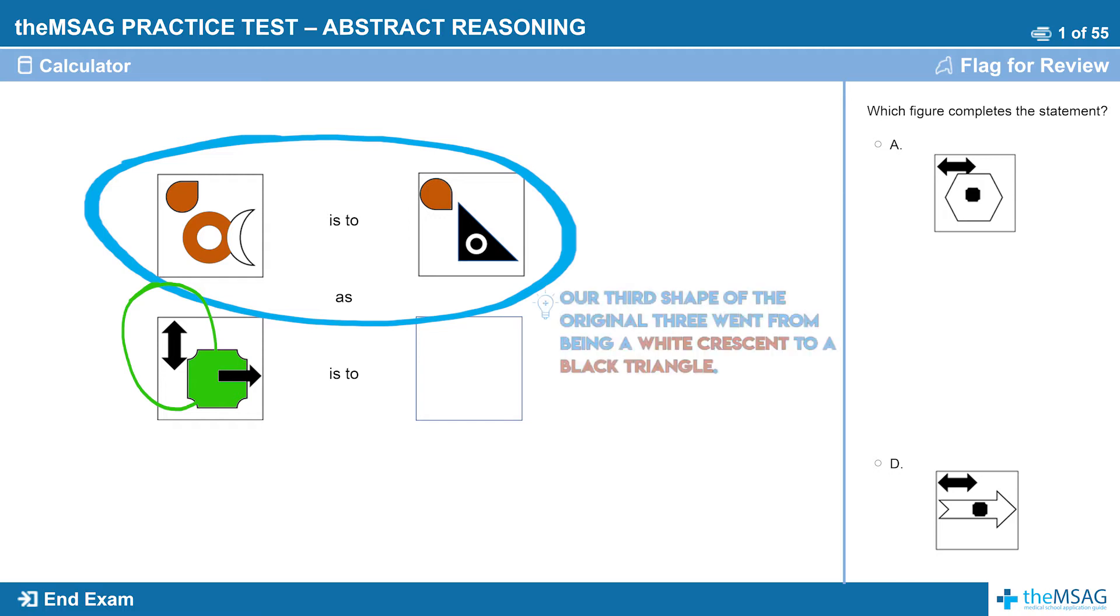Finally, our third shape of the original three went from being a white crescent to a black triangle. This is a harder transformation to understand. Yes it changed color, but can you spot what the other change represents? The answer is that the shape also gains an edge or a side. A crescent has two edges whereas a triangle has three.